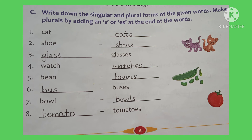Children, here we have an exercise to complete. Take your textbook and turn to page number 50. Let me read the heading: 'Write down the singular and plural forms of the given words. Make plurals by adding S or ES at the end of the words.' The first one is Cat → Cats. We add the letter S to the word Cat. The second one is Shoe → Shoes — we add only S to the word Shoe.